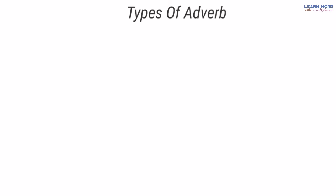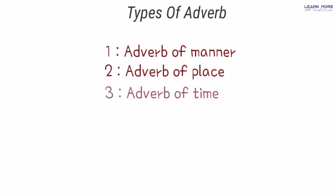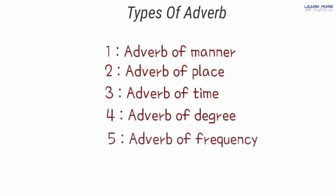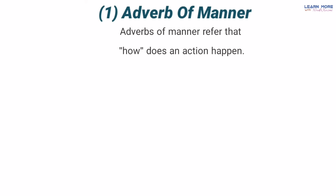Number one: Adverb of Manner. Number two: Adverb of Place. Number three: Adverb of Time. Number four: Adverb of Degree. And number five: Adverb of Frequency. Now let's define each of them. Number one — Adverb of Manner: adverb of manner humein yeh batate hain ke koi kaam kaise hota hai, yani yeh kaam ke manners ke baare mein batate hain. It means adverb of manner refers to how does an action happen.